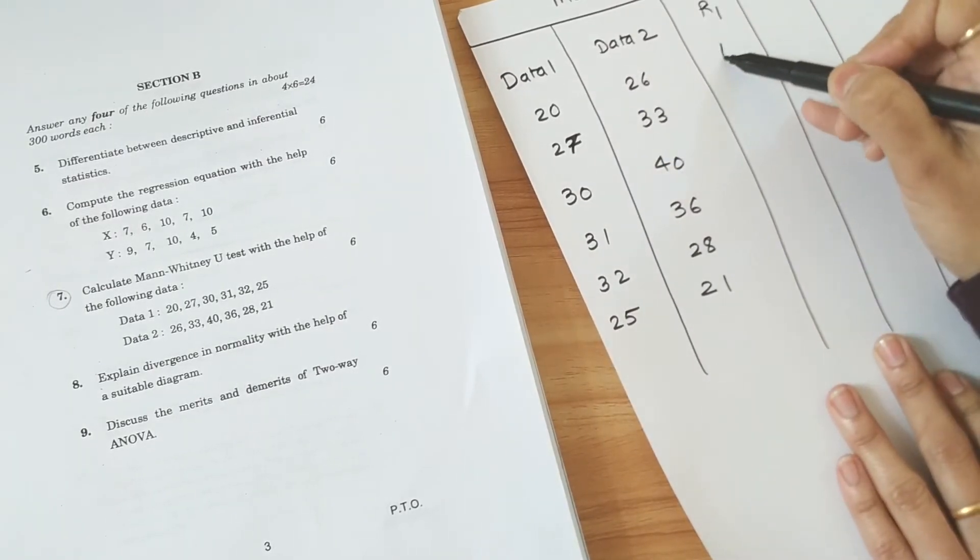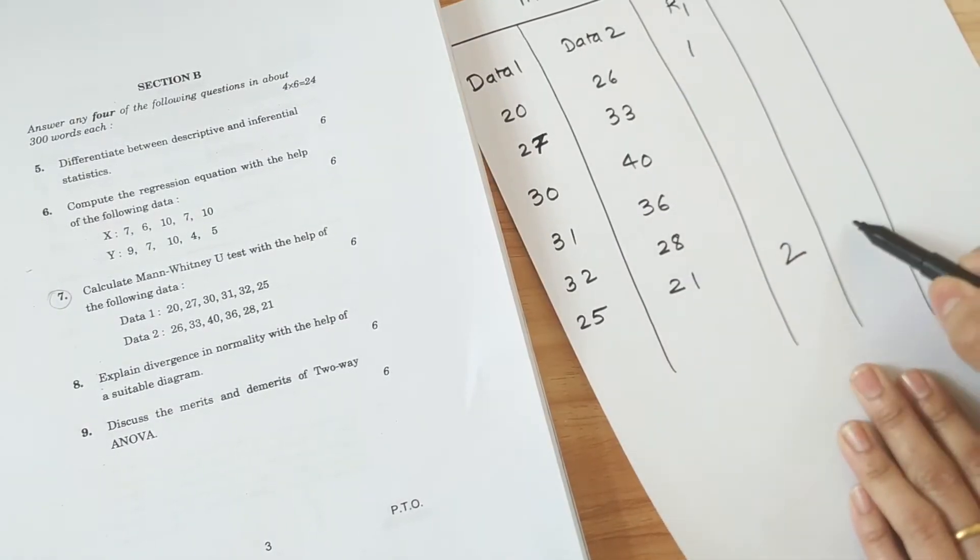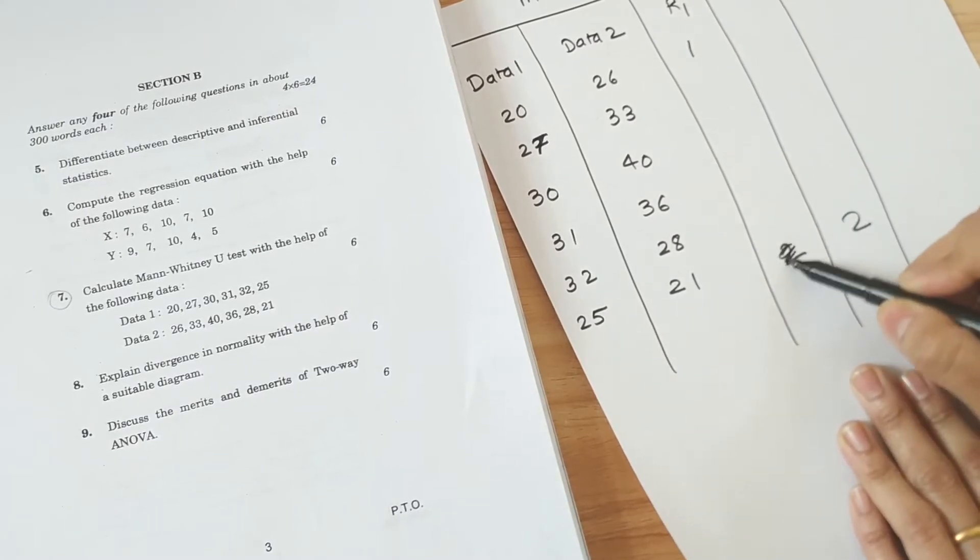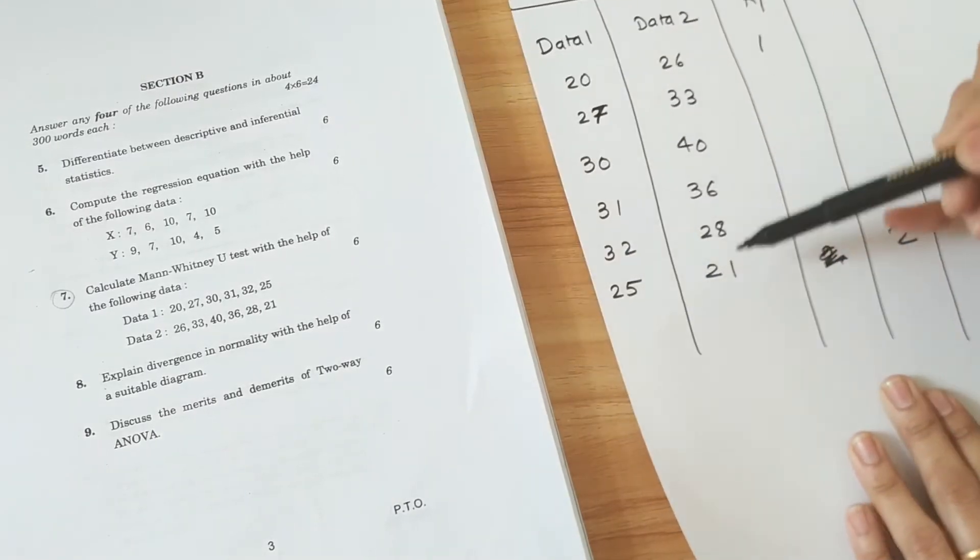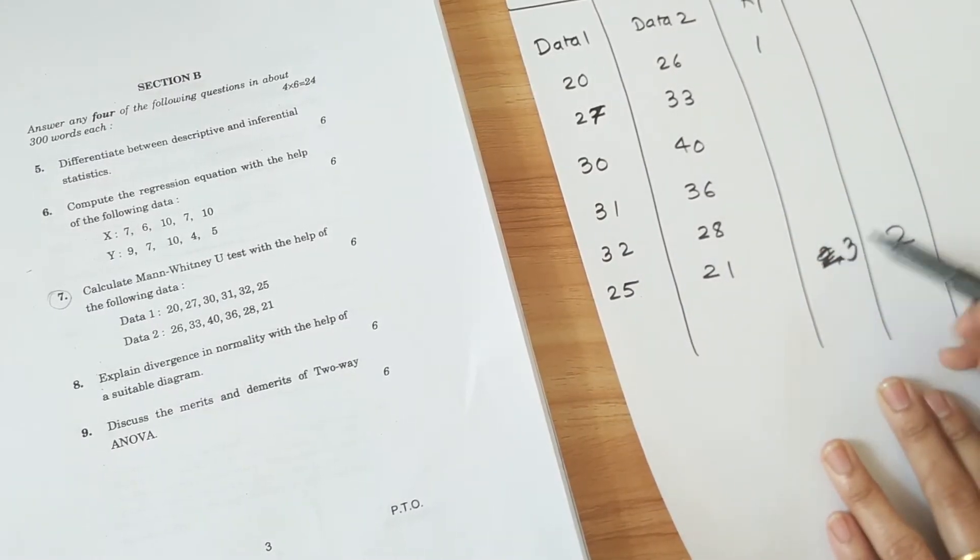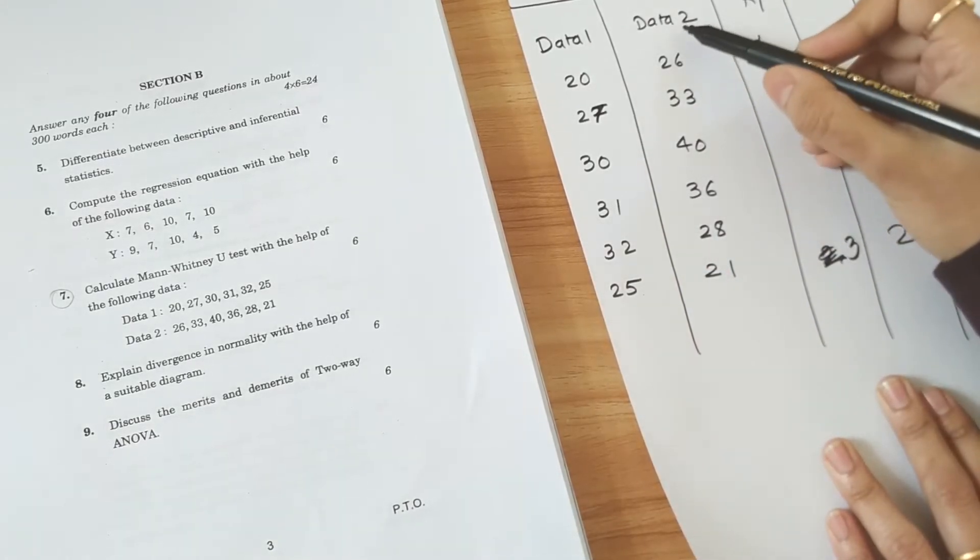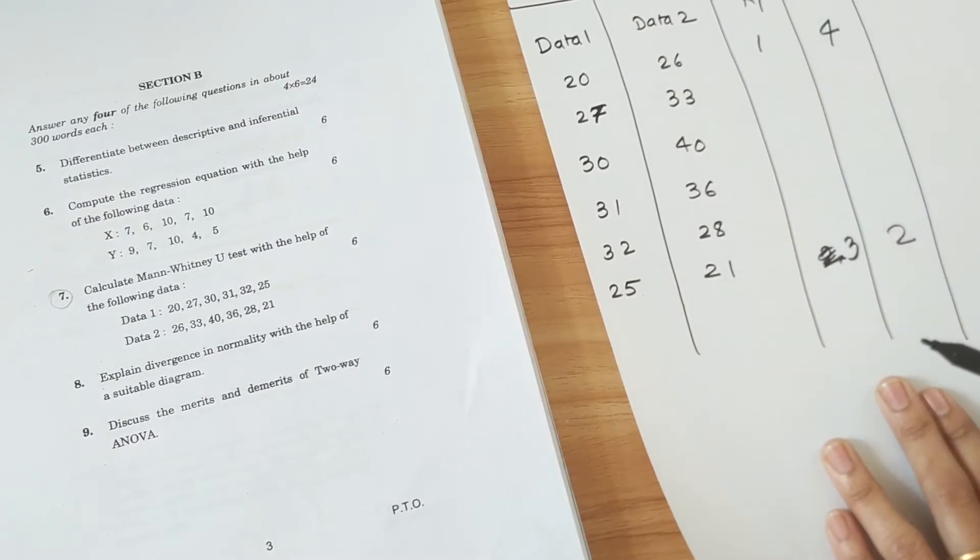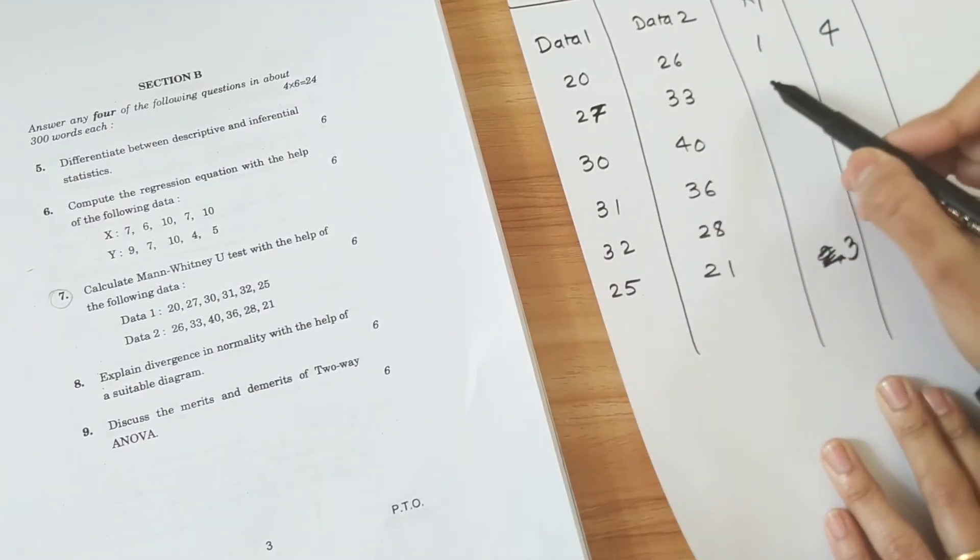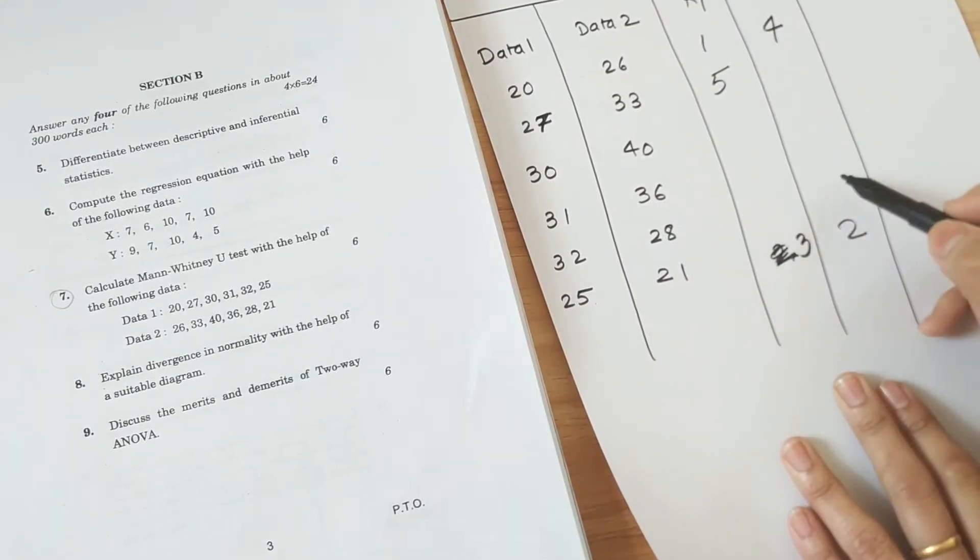So how we rank is 20 goes first. 21 of this column goes over here. It's on the second rank. Then which is on the third rank is the next number 25, goes in the first column. Then 26 belongs to second column, so it goes to R2. It's on the fourth number. 27 on the first column, so fifth goes here. 28 in the second column, so sixth goes here.